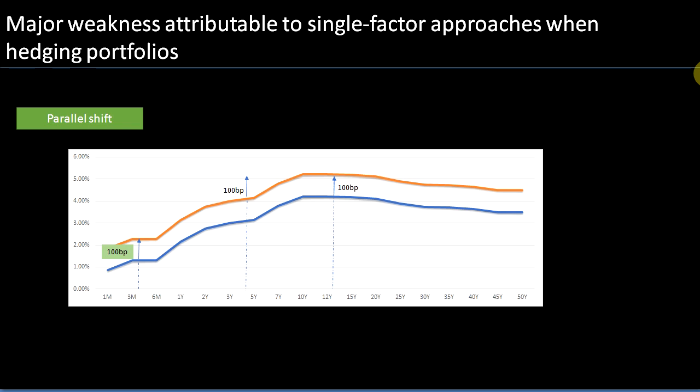Remember when we were talking about DV01s — the change in a portfolio's value due to a one basis point shift in interest rates. This could be a change in spot interest rates, forward interest rates, or even the par yield. For this video we'll assume we are talking about spot interest rates. DV01 means the dollar value change in a portfolio's value due to a one basis point shift in the interest rate curve. One of the biggest assumptions is that the whole curve goes through a parallel shift.